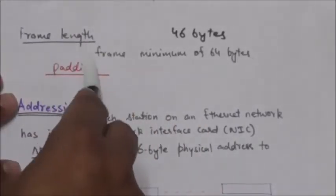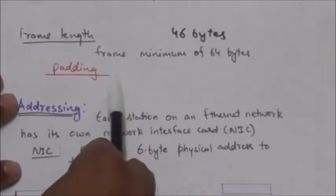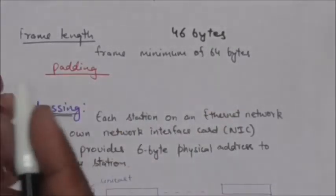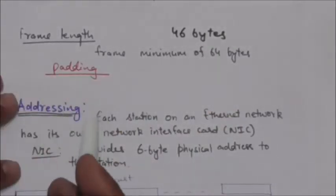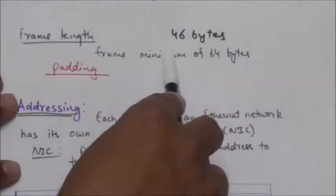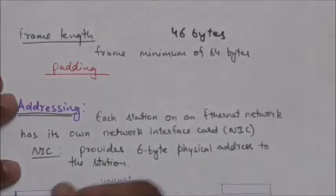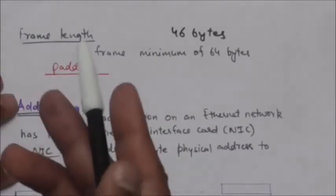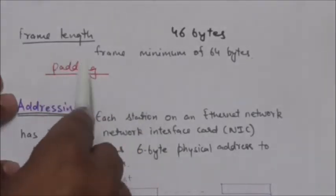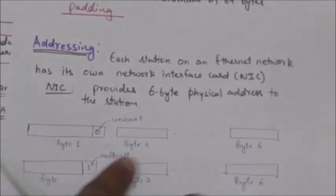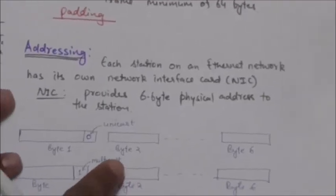An Ethernet frame needs to have a minimum of 64 bytes, of which 18 bytes are header and trailer. Therefore the minimum length of data from the upper layer is 46 bytes. If the upper-layer packet is less than 46 bytes, padding is added to make up the difference.